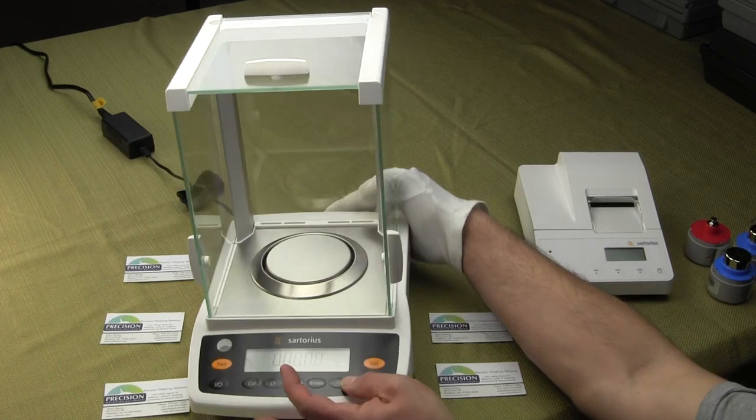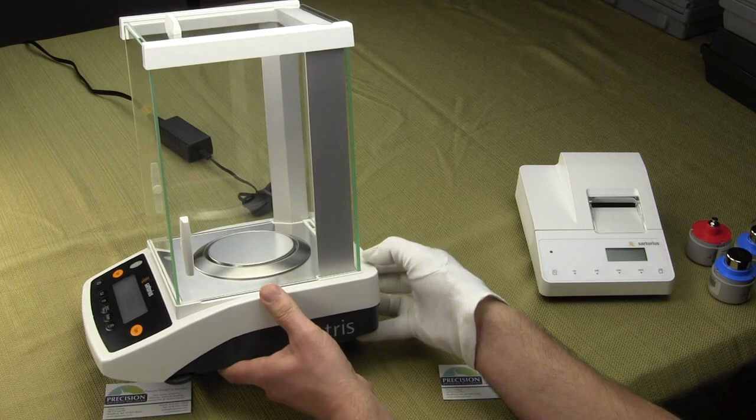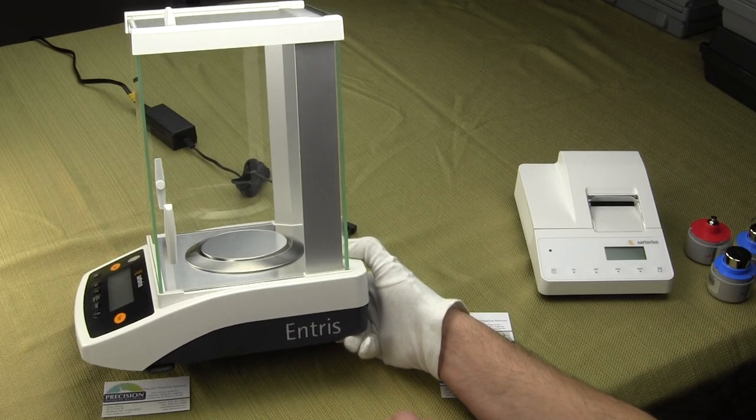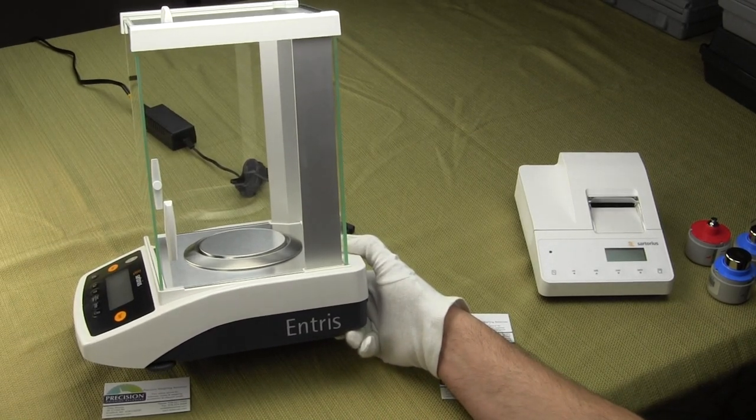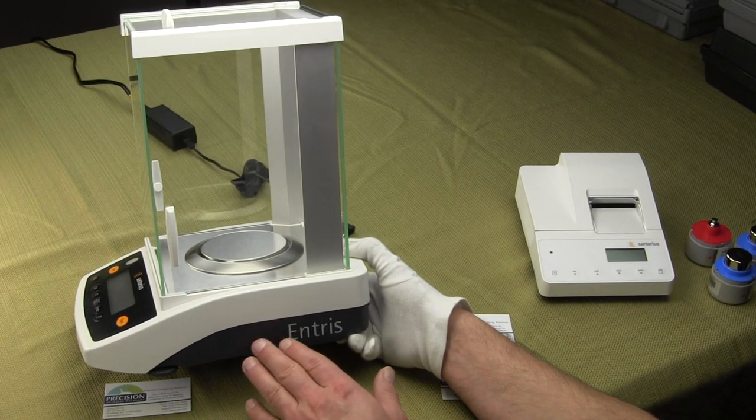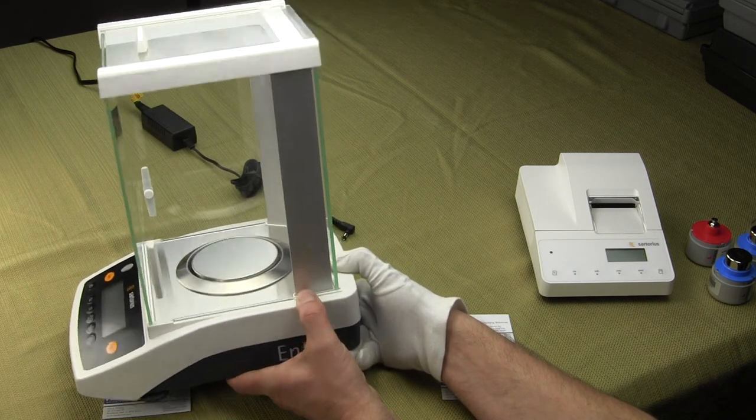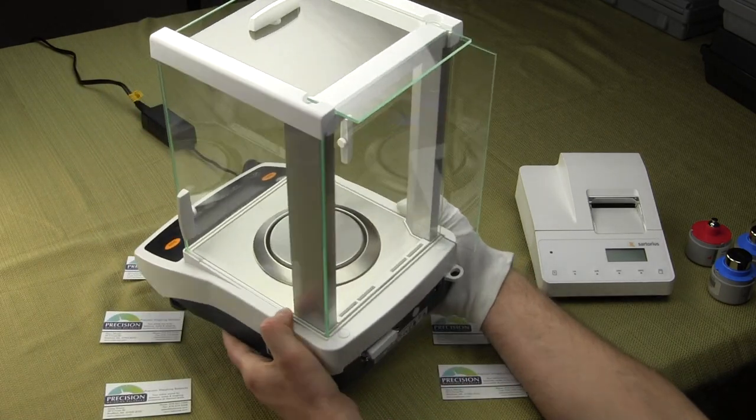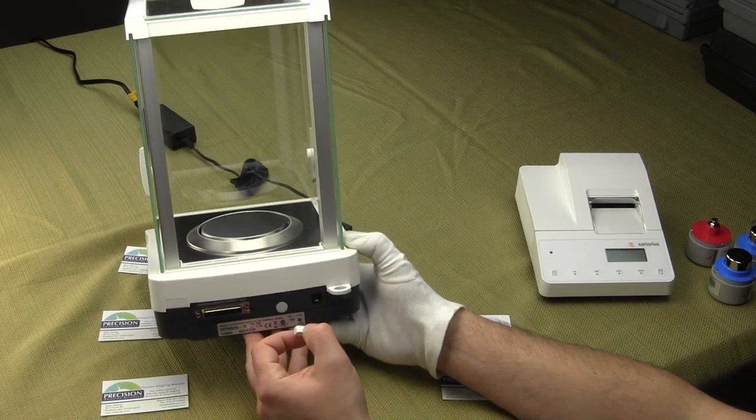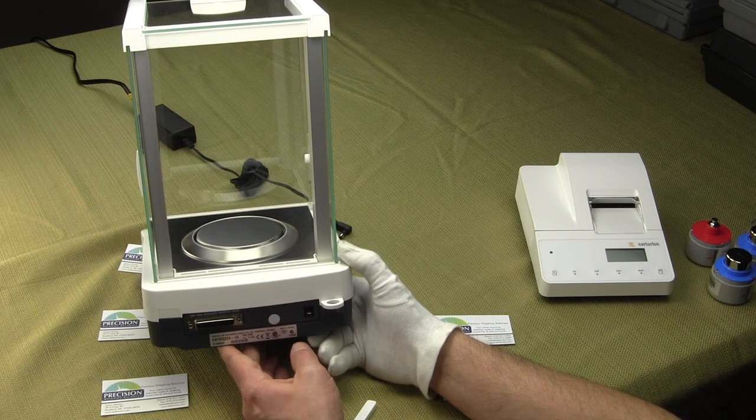Going over the side of the balance, as I mentioned, Sartorius marks it as Entris series. This is how they're doing all their new balances. If you buy a Practum series, a Quintix series, or a Secura series, the theme is to have the series name screened on the side of the balance.